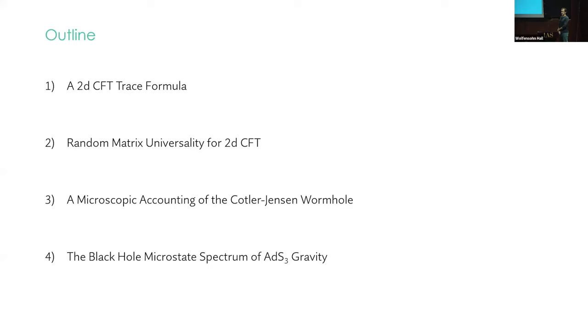The outline for the rest of the talk is the following. First, I'll present this 2D CFT trace formula, which glues everything together. This will lead us to a criterion for when a 2D CFT exhibits random matrix universality in the sense of having a linear ramp in the spectral form factor. We'll then turn to the large C realm and pure gravity and talk about the Kotler-Jensen wormhole and the black hole microstates. So the first half of the talk will be arbitrary C, and then we'll move to large C and gravity.